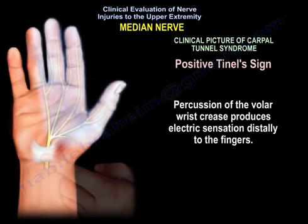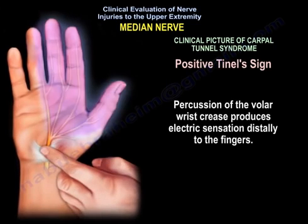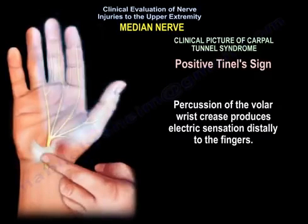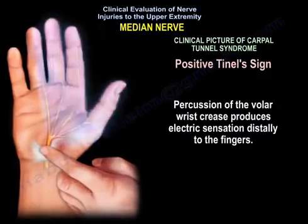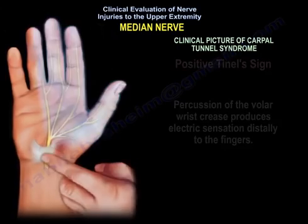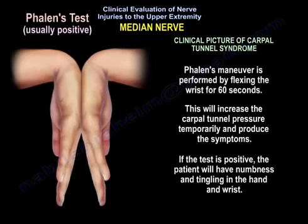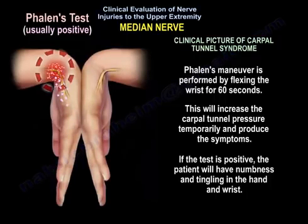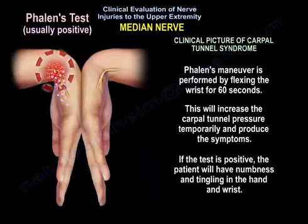Positive Tinel's Sign: percussion of the volar wrist crease produces an electric sensation distally to the fingers. Phalen's Test is usually positive. It is done by flexing the wrist for 60 seconds, which will increase the carpal tunnel pressure temporarily and produce the symptoms.